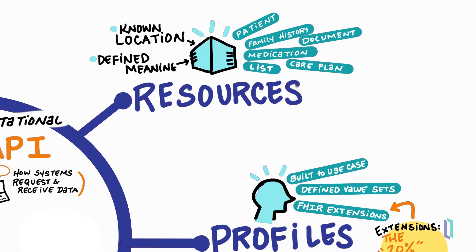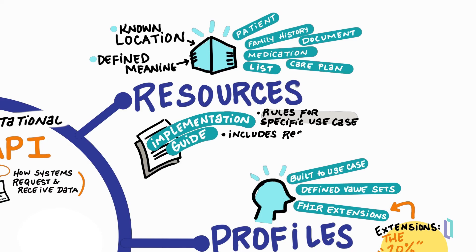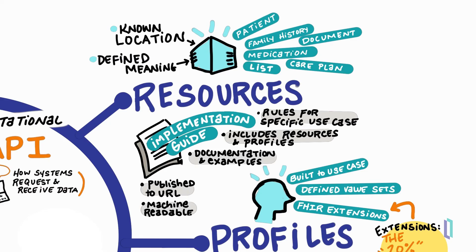Finally, when it comes to putting the FHIR standard into use for a specific purpose, you can refer to FHIR implementation guides, which contain the profile resources, including extensions, terminology bindings, and value sets needed for a particular use case. Beyond these technical details, FHIR implementation guides provide documentation and examples of how they might be used. These guides are published to a publicly available URL using a web publishing tool made by HL7 International as part of the FHIR specification. Since they are machine-readable, FHIR implementation guides can be used to validate FHIR applications developed by using them. To learn more about the FHIR standard, refer to the other content on the InterSystems Learning site.